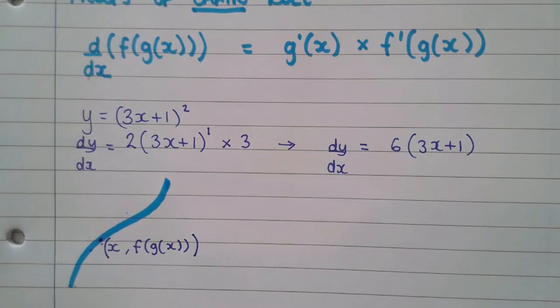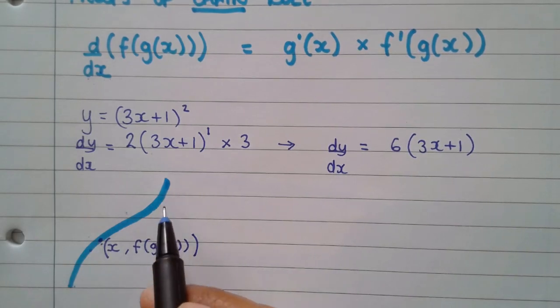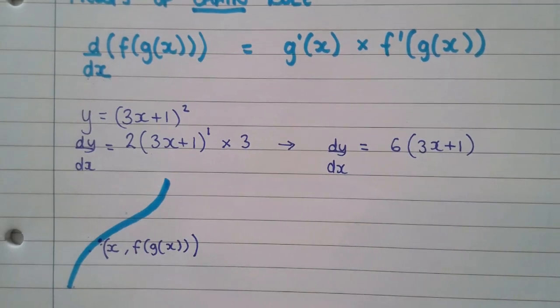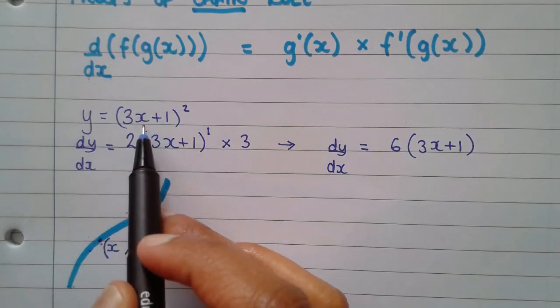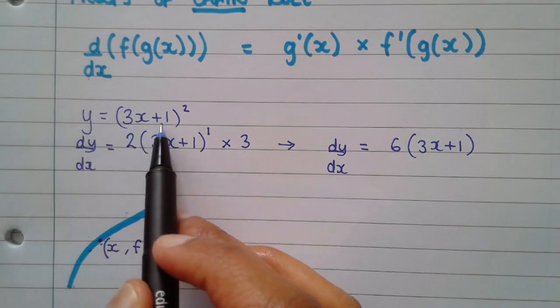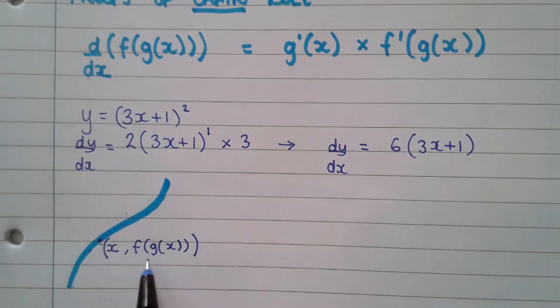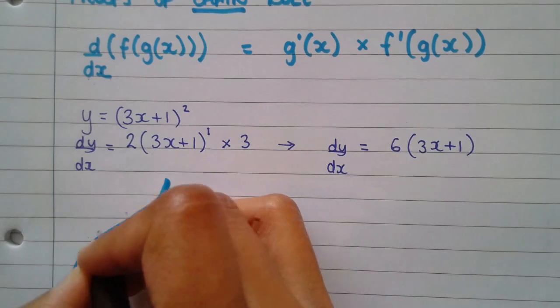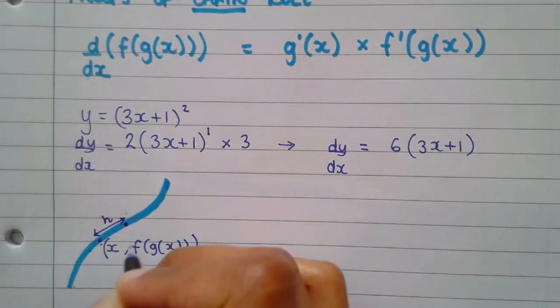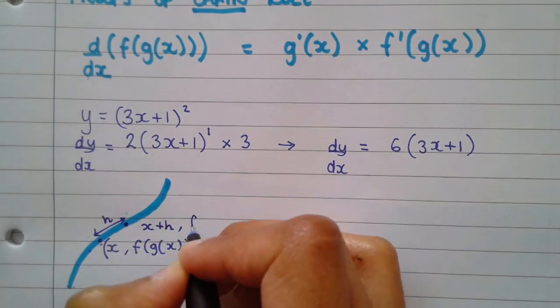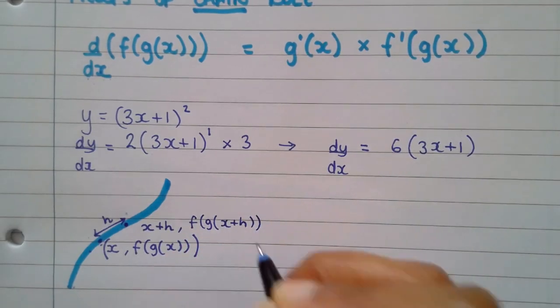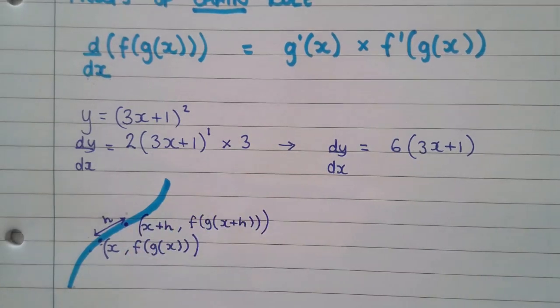I'm just going to explain that one more time. If we pick a coordinate on this function, which is a composite function, like looking at this example here, on this type of function, the x coordinate would be x, the y coordinate would be 3x plus 1 all squared. That means the y coordinate on this generic expression would be f of g of x. Now let's pick another coordinate, which is the gap of h away. So therefore, that makes the coordinate x plus h comma f of g of x plus h. And there's the big bracket for the coordinates. This is very important to understand before you can start the proof.